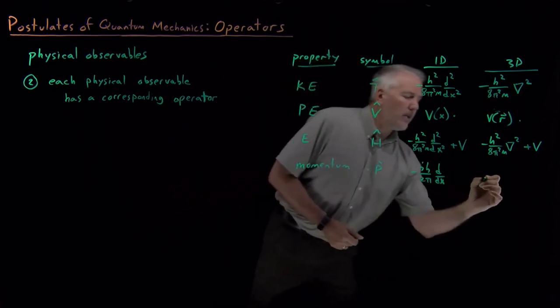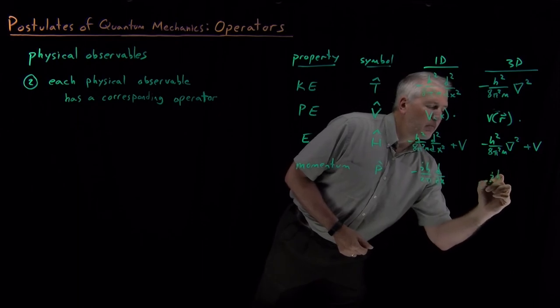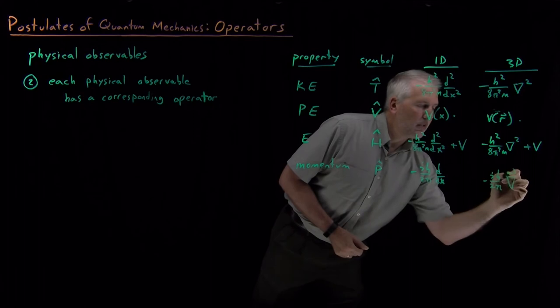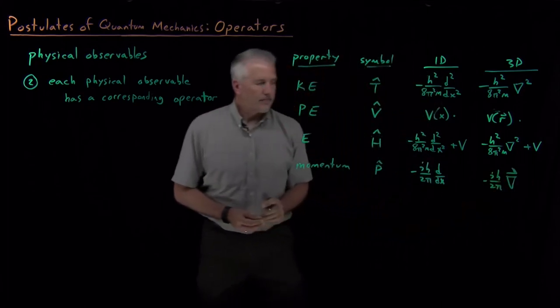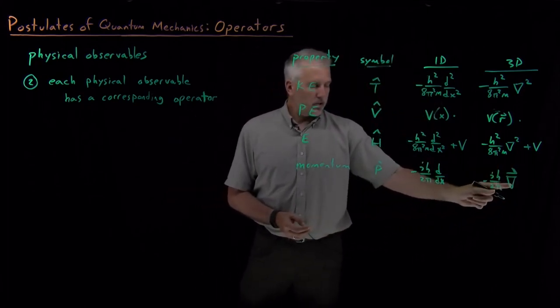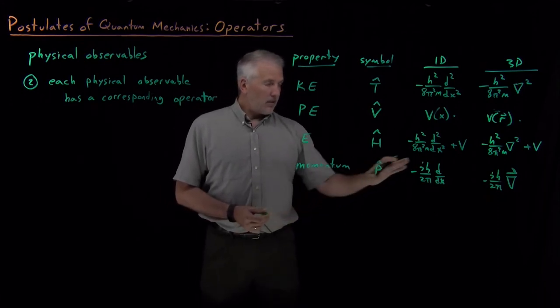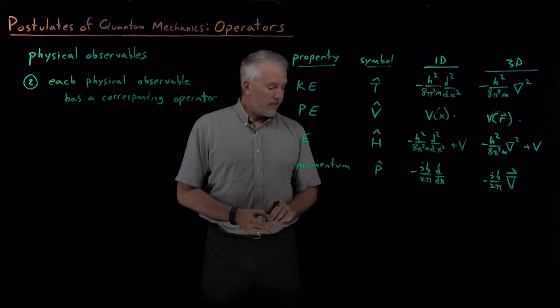Likewise, in 3D, it looks similar. It's minus ih over two pi times del, which includes the ddx, ddy, ddz derivatives in that vector.